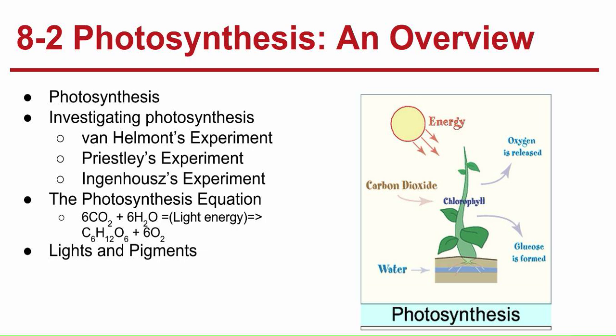8-2, photosynthesis an overview. Photosynthesis is the way plants can make their own energy. Plants use sunlight to convert water and carbon dioxide into high-energy carbohydrates, sugars and starches, and oxygen.